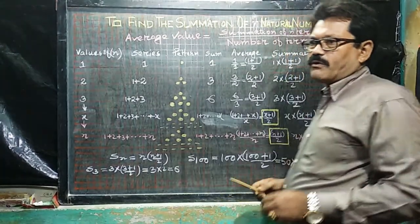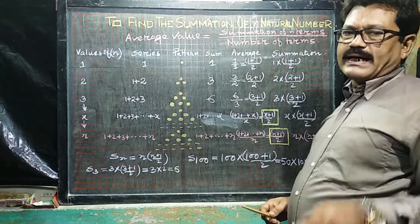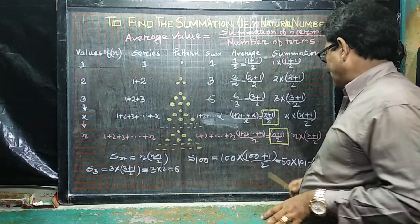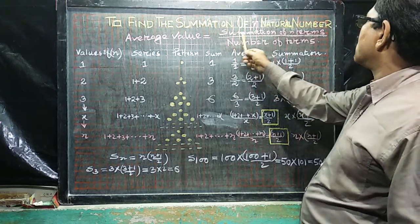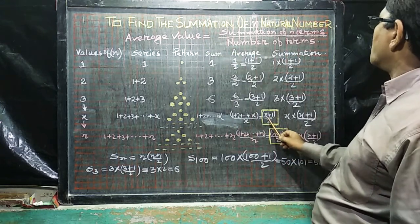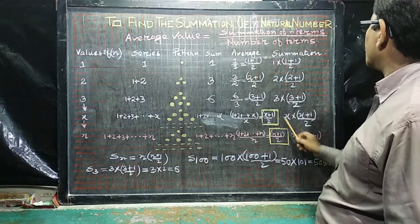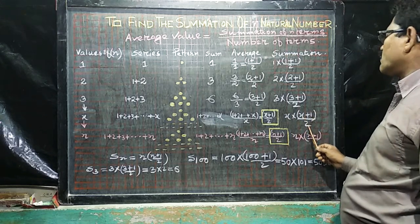As per example, if we consider 1 to 10, the average value, 1 plus 10, divided by 2, that is 5.5. So, here you can write, the summation of n terms, that is, the average value, this is your average value, and number of terms is x. So you can write, x multiplied by x plus 1, by 2.